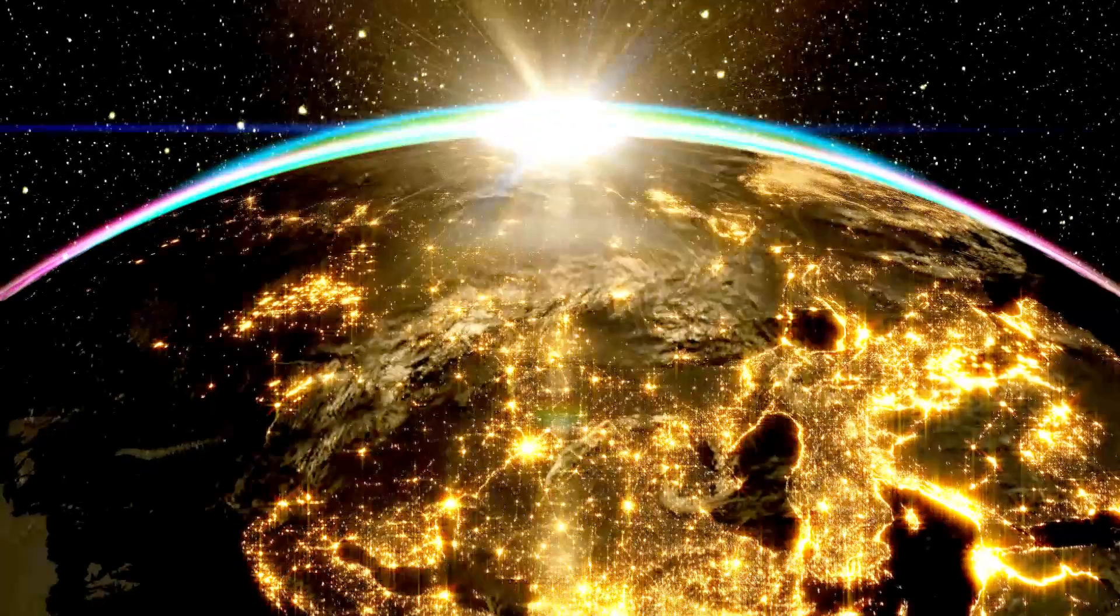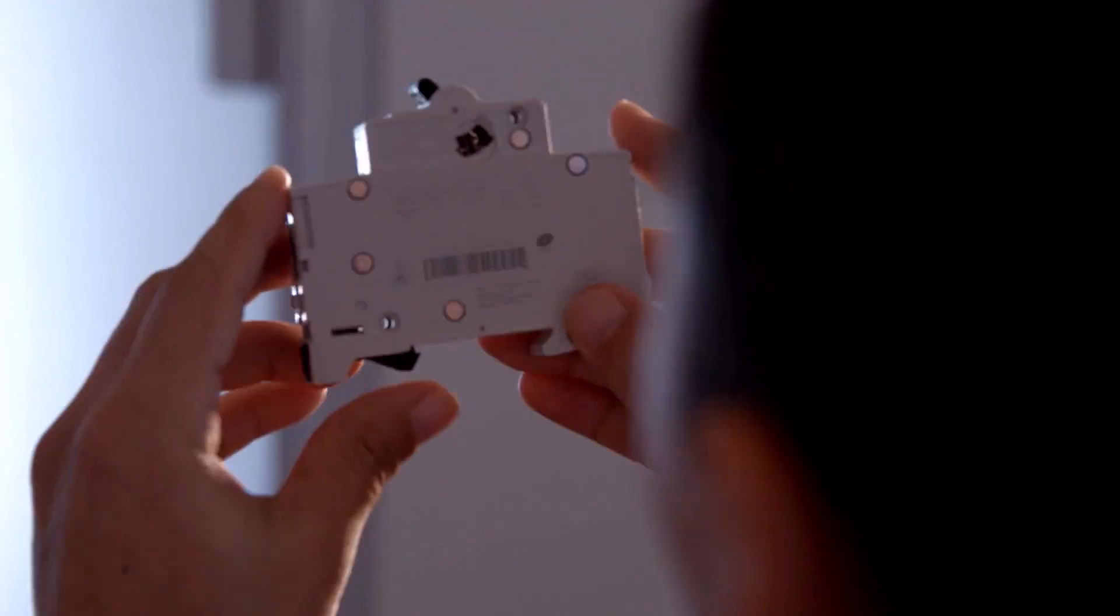At ABB, this is our world. The miniature circuit breaker—this small device protects people and equipment in homes, offices, and factories all over the world.